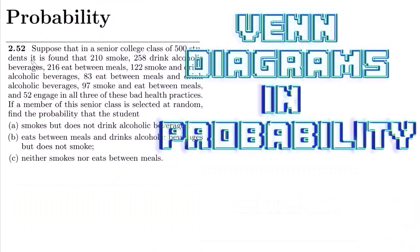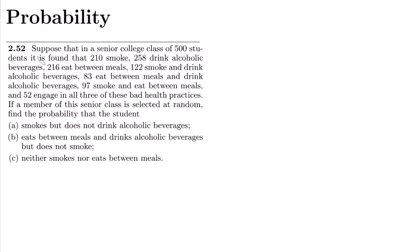This is question 2.52. The statement is: suppose that in a senior college class of 500 students it is found that 210 smoke, 258 drink alcoholic beverages, 216 eat between meals, 122 smoke and drink alcoholic beverages, 83 eat between meals and drink alcoholic beverages, 97 smoke and eat between meals, and 52 engage in all three of these bad health practices. If a member of this senior class is selected at random, find the probability for each case.